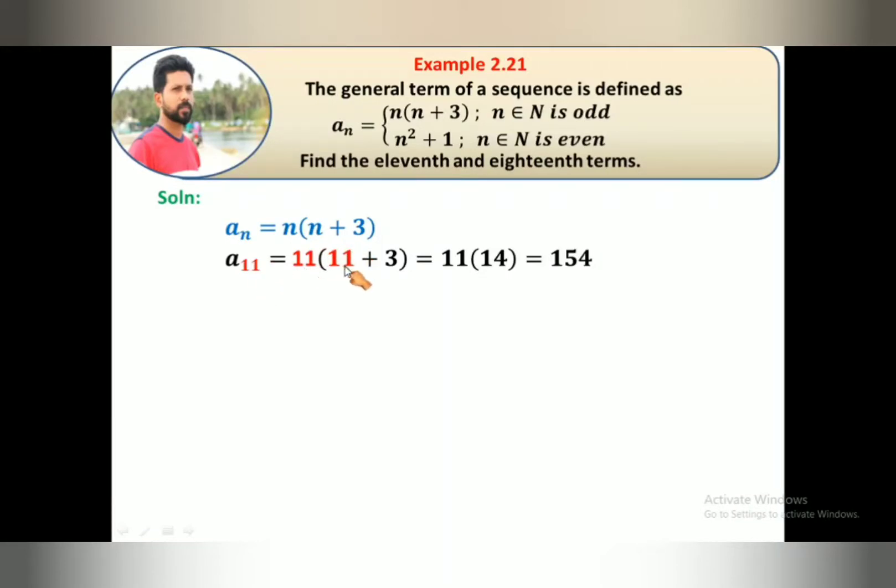Now for the 18th term. 18 is even, so we use a_n = n² + 1. The 18th term equals 18² + 1, which is 324 plus 1.